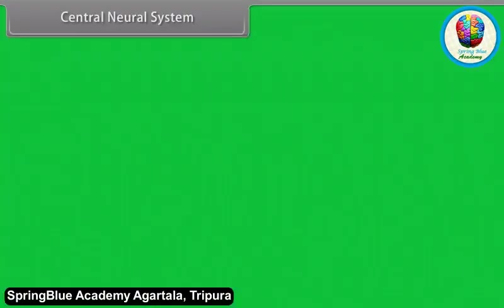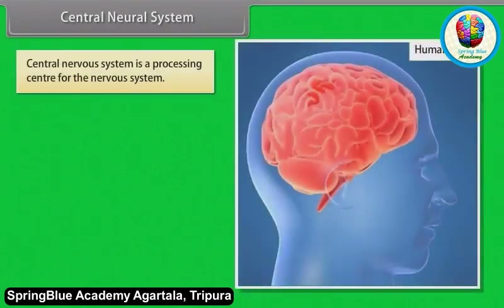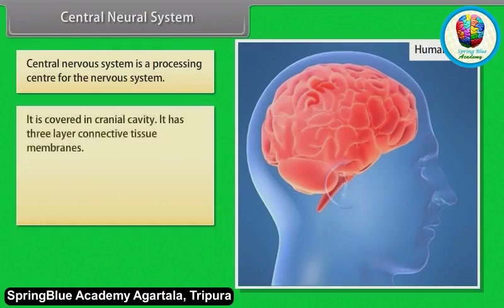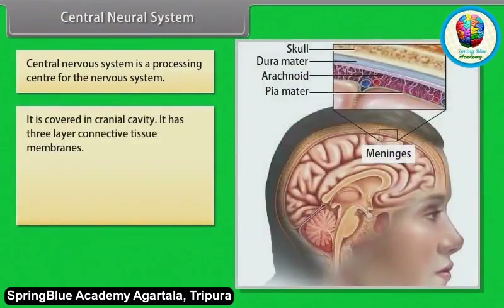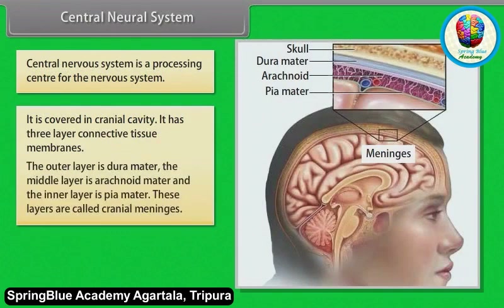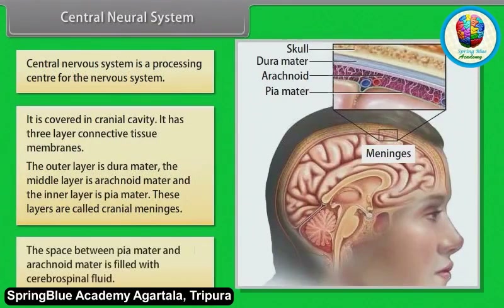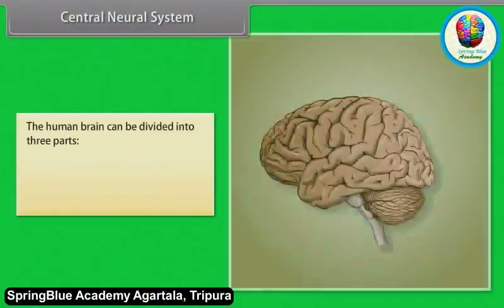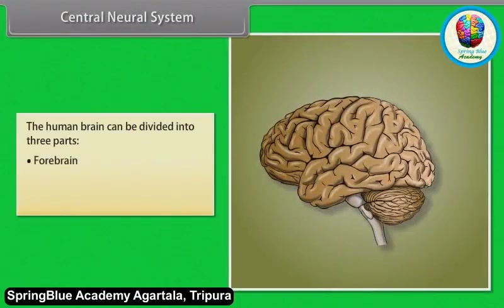The central nervous system is a processing center for the nervous system. It is covered in the cranial cavity and has three-layer connective tissue membranes: the outer layer is dura mater, the middle layer is arachnoid mater, and the inner layer is pia mater. These layers are called cranial meninges. The space between the pia mater and arachnoid mater is filled with cerebrospinal fluid. The human brain can be divided into three parts: forebrain, midbrain, and hindbrain.